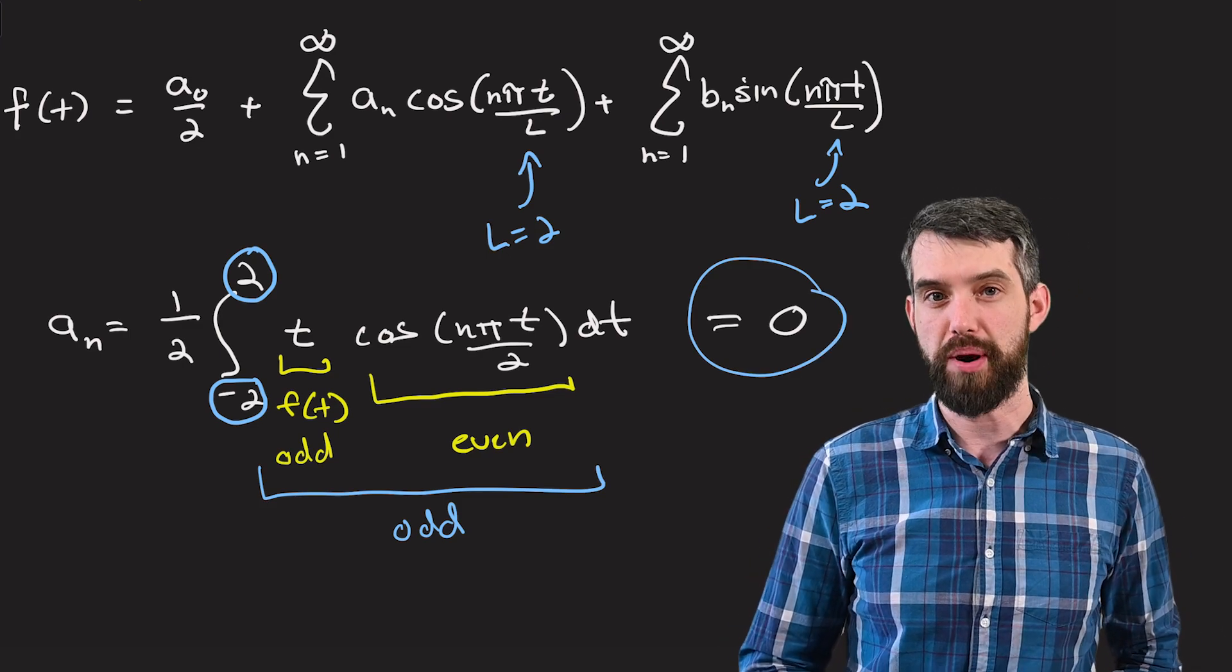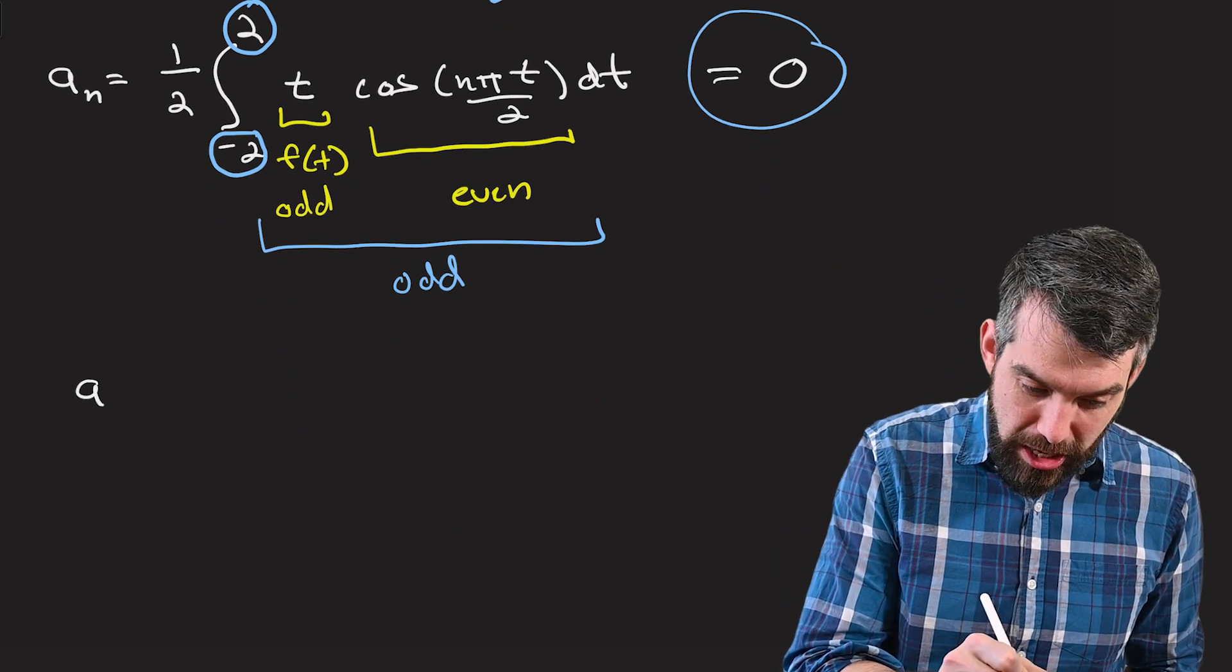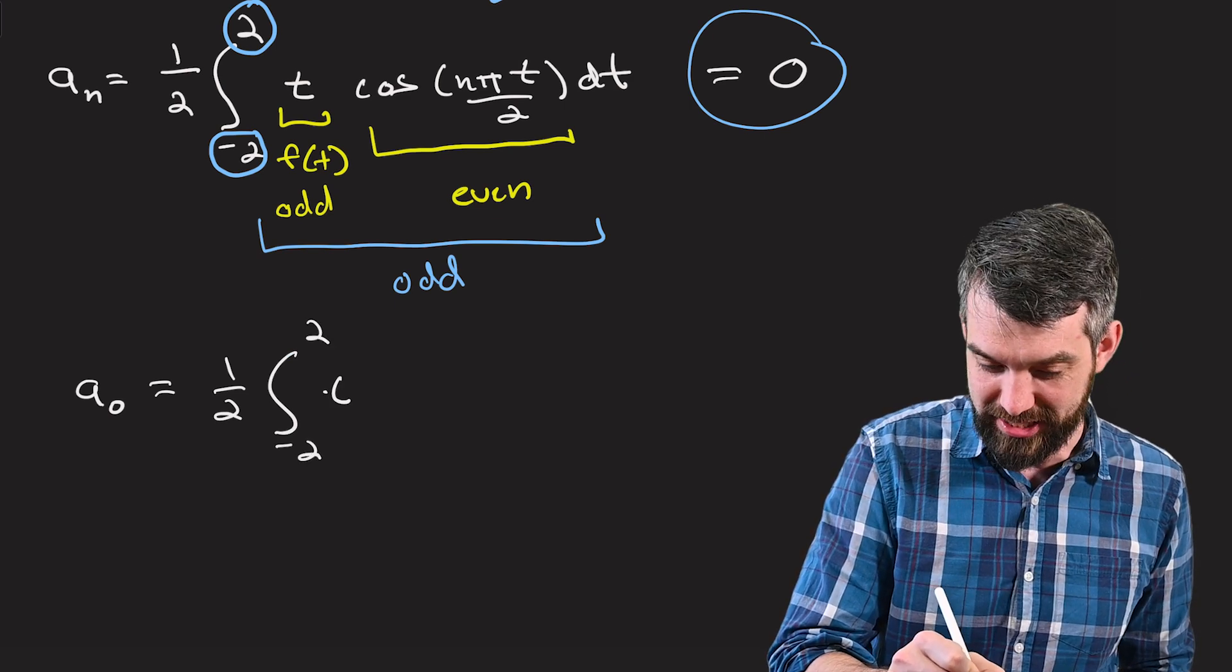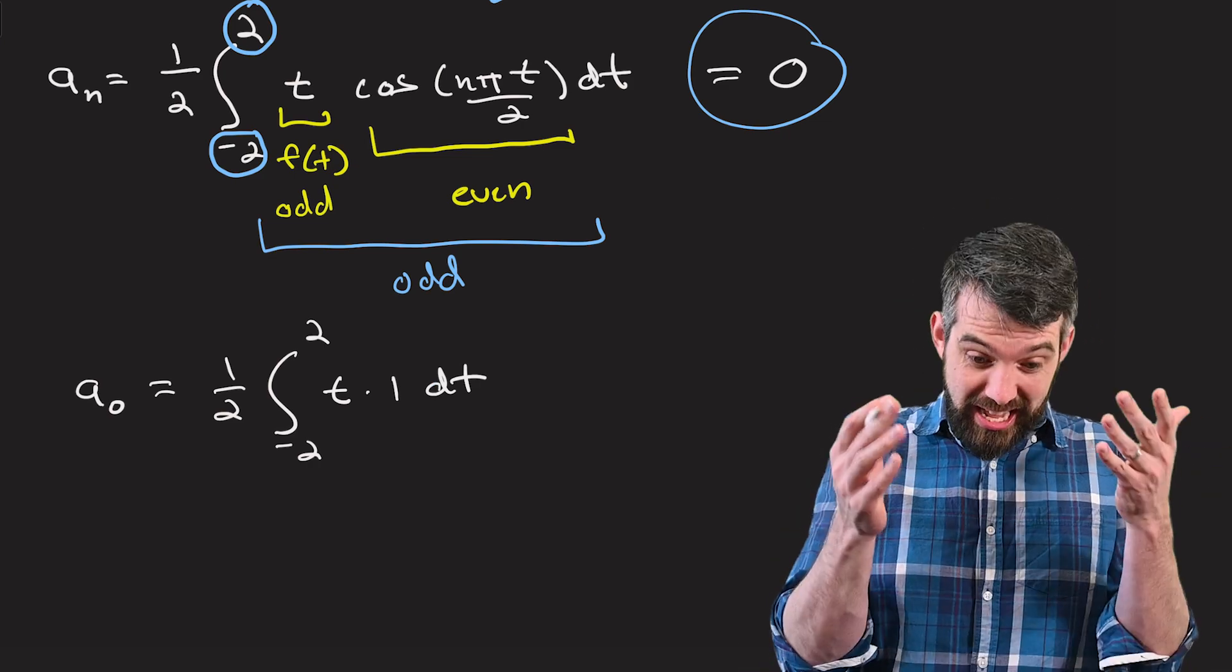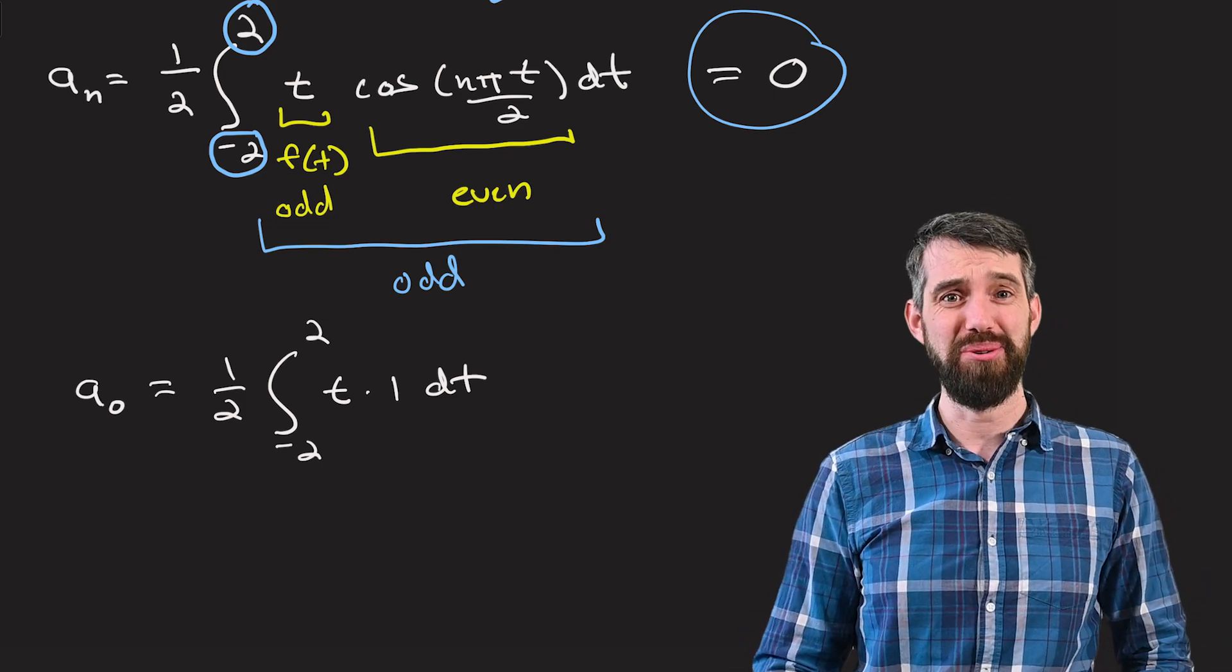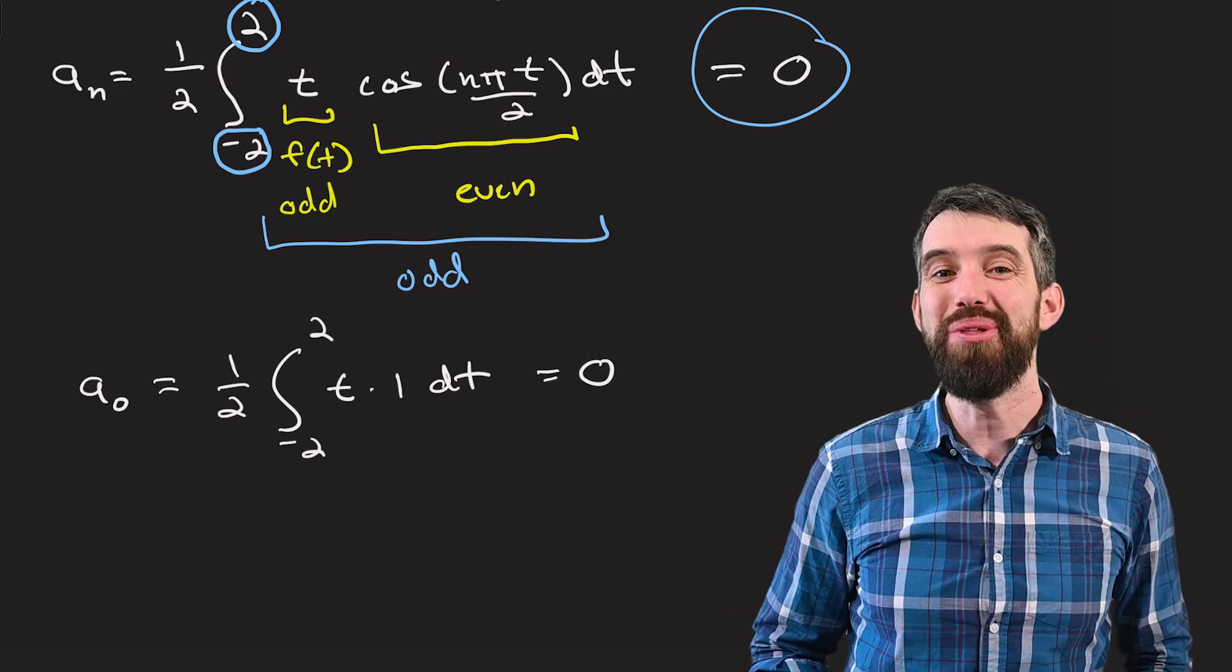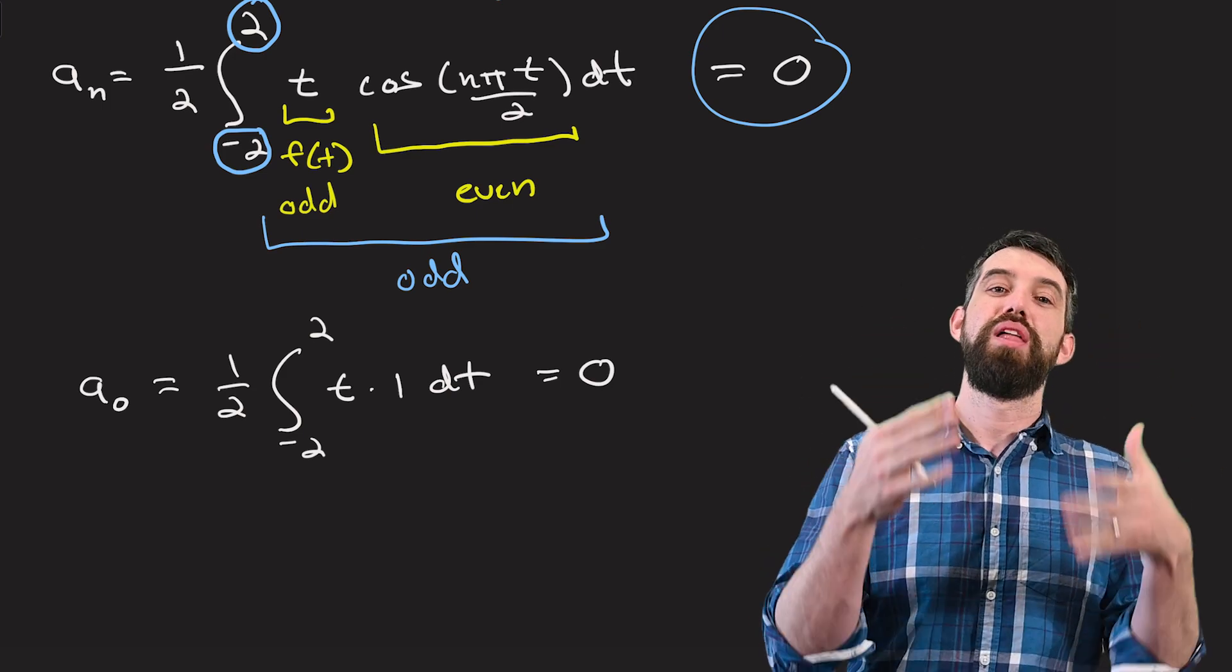I can actually do the same argument for the a_0. So how does the a_0 work? a_0, again, is 1 over 2, the integral from minus 2 up to 2 of t times 1 dt. This is actually easier to see. Again, it's an odd integrand. It's an easier one to do. t squared divided by 2. And you can plug in 2 and minus 2. Indeed, they cancel. This one is also going to be exactly 0. But I don't even need to do the integral. I immediately look at that integrand. I say, odd integrand, symmetric interval. It's going to be 0.